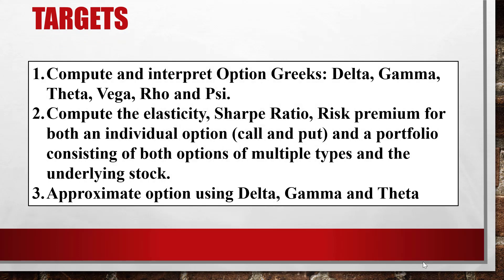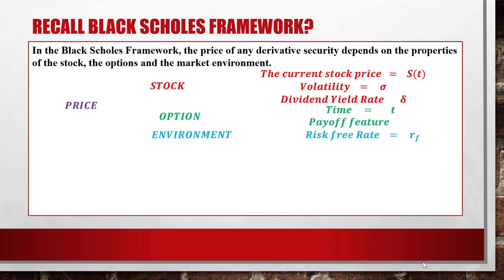The targets of this lesson are: first, compute and interpret option Greek letters Delta, Gamma, Theta, Vega, Rho, and Psi; compute the elasticity, the Sharpe ratio, and the risk premium for both an individual option — call and put — and a portfolio consisting of multiple types and the underlying stock; and third, to approximate options using Delta, Gamma, and Theta.